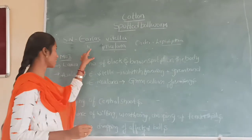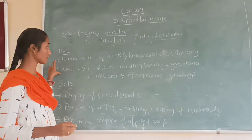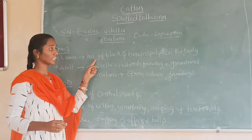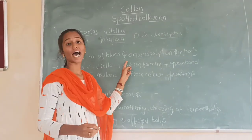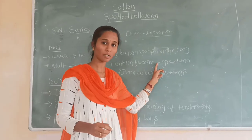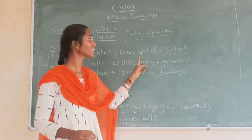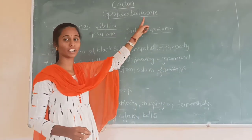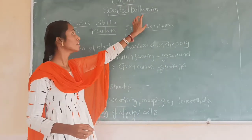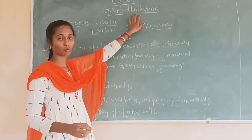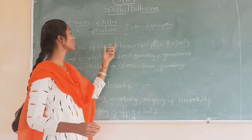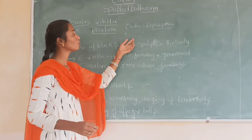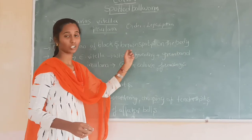I am going to show you the marks of identification. There are a number of black and brown spots on the body, and that is the reason why it is called Spotted Bollworm. So, I am going to show you these black and brown spots on the body.